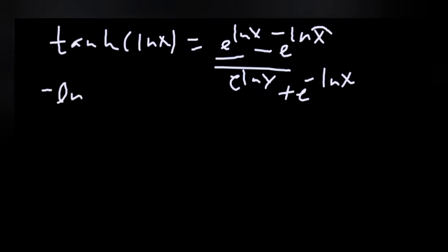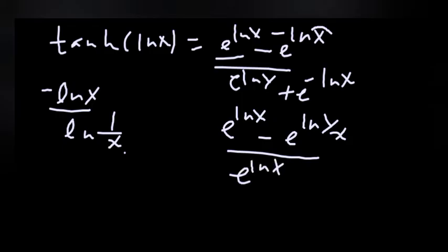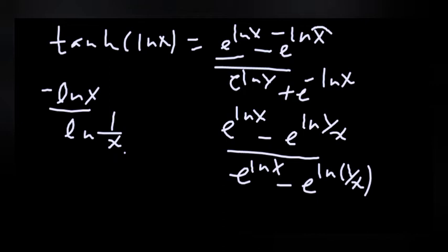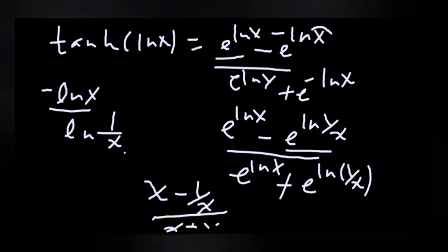Now, minus ln x means ln of (1 over x). So e to the power of ln x equals x, and e to the power of minus ln x equals e to the power of ln(1/x), which means 1 over x.